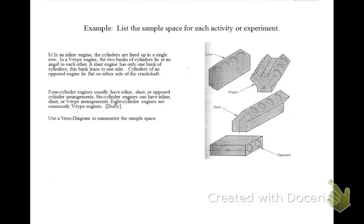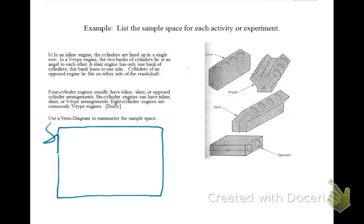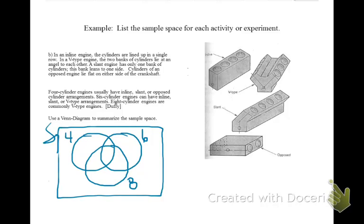Use a Venn diagram to summarize the sample space. The first thing we will do is represent the sample space with a box. Next, we will draw circles to represent the 4, 6, and 8-cylinder engines. Our next step will be to put the type of engine into each of the correct circles. 4-cylinder engines can have inline, slant, or opposed. 6-cylinder engines can have inline, slant, or V. 8-cylinder engines are commonly V.